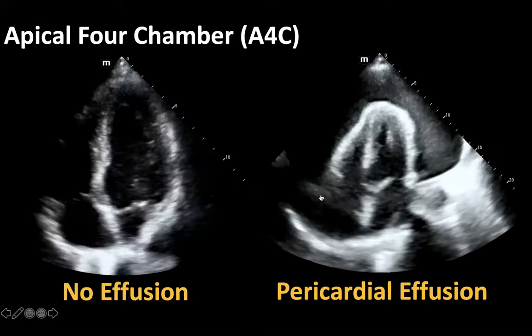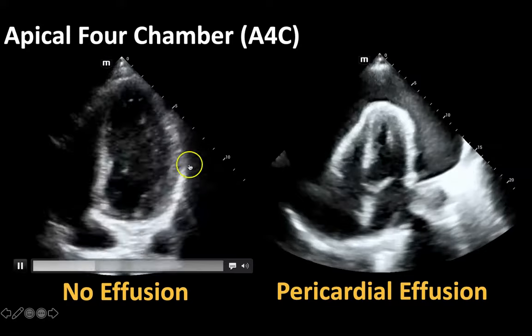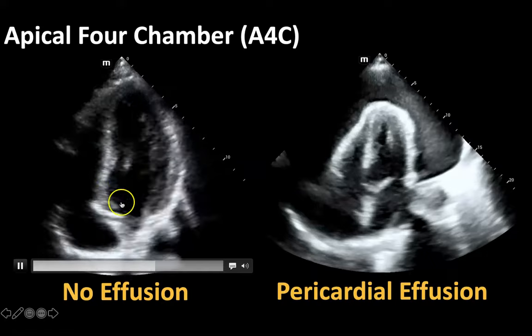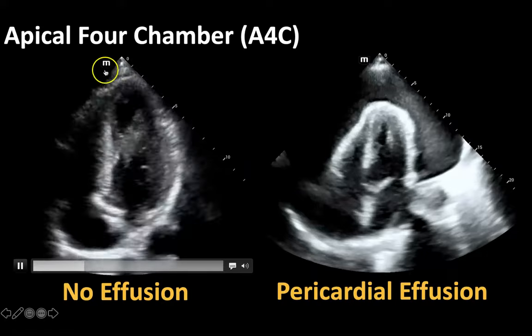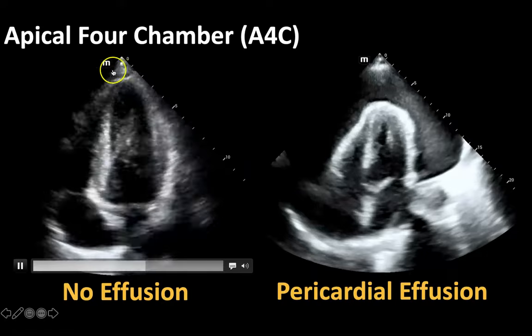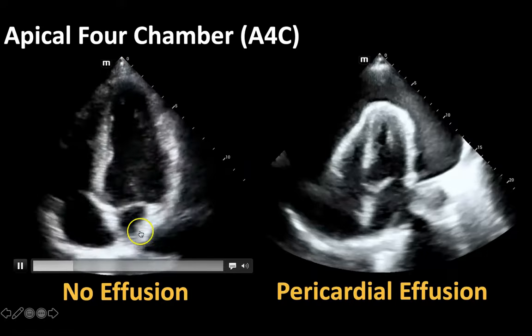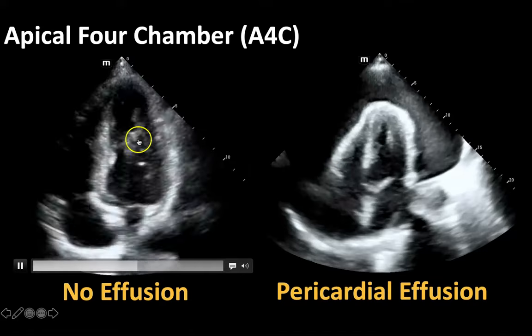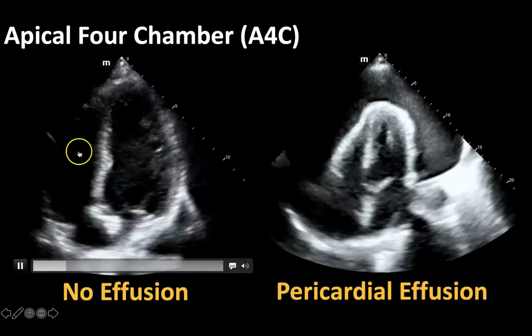We can also assess for effusions in your apical four chamber view. Here's your four chambers with our probe going in at the apex of the heart — here's your left atrium, your left ventricle, your right atrium, and your right ventricle.